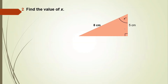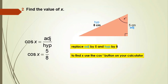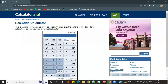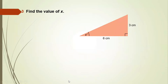Question 2 of this type: find angle x where the adjacent side is 5 cm and hypotenuse is 8 cm. We use the cos ratio: cos x = 5/8, so x = cos⁻¹(5/8). Using the calculator, cos⁻¹(5/8) = 51.31 degrees, which to 3 significant figures is 51.3 degrees.